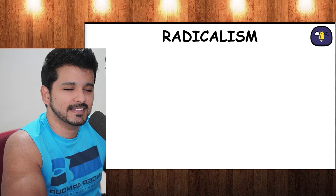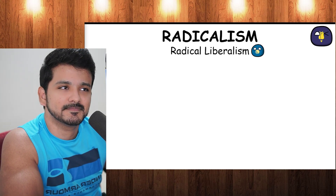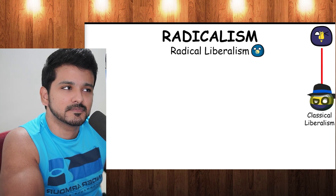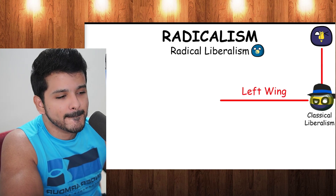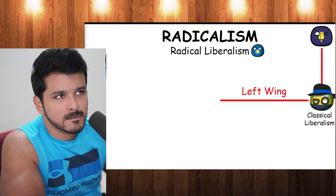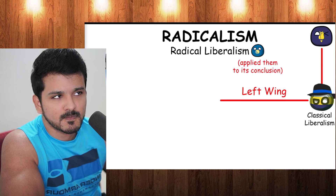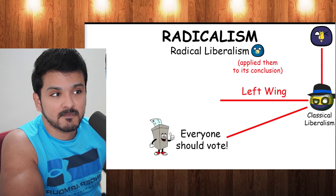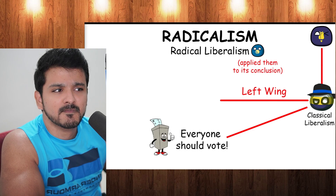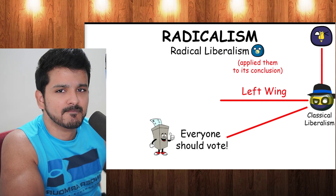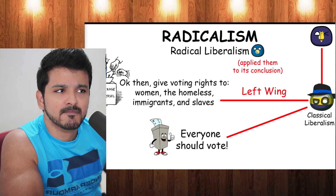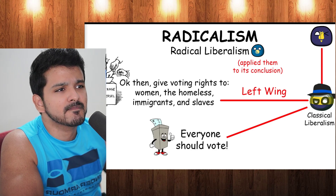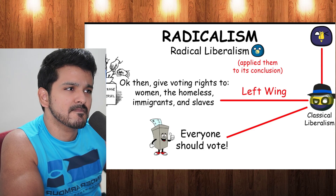Radicalism, or radical liberalism, was a historical set of movements within classical liberalism representing its left wing. Radical liberalism took the principles behind liberalism and applied them to their conclusion. For example, a classical liberal might say that a democratic system of government and the right to vote should be given — but a radical liberal would take that to its conclusion: that women, those without property, immigrants, slaves, etc., should all be given the right to vote.